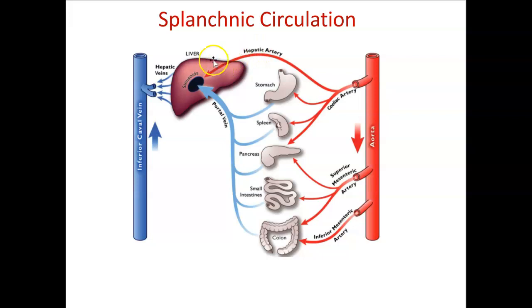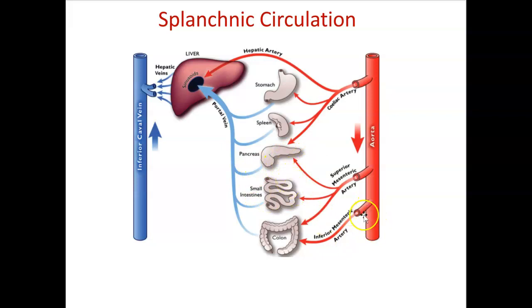The left gastric goes to the stomach, and there's also a right gastric on the models. The superior and inferior mesenteric vessels also come right off the aorta. The superior mesenteric supplies parts of the pancreas and small intestine, and the inferior mesenteric supplies most of the large intestine.